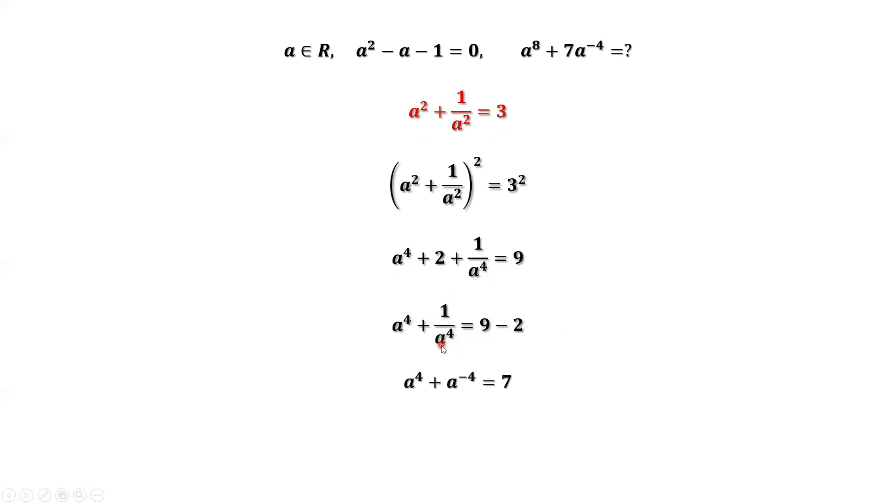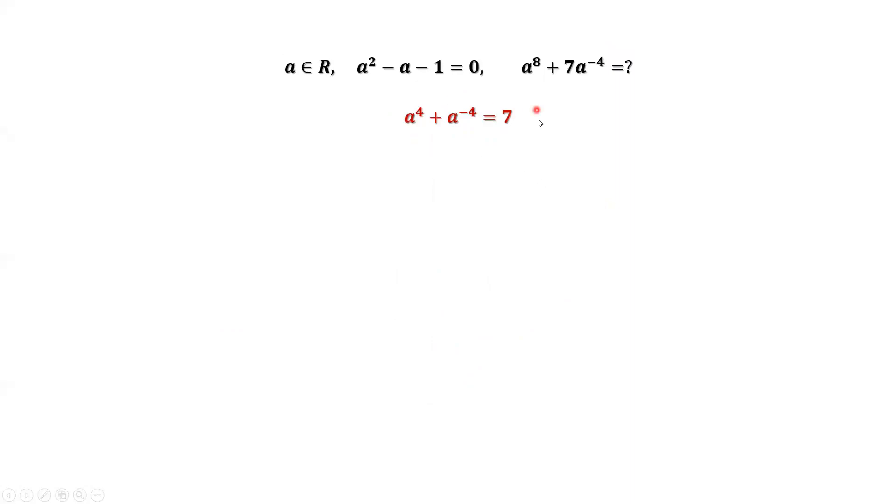We can rewrite one over a to the power of four as a to the power of negative four. We are trying to match the given question. This is the current result. We are ready to derive the final answer for this question using the current result.